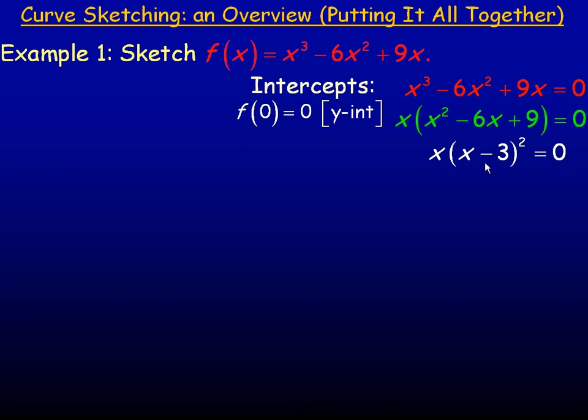So we have two different factors, so there's two different x-intercepts. And so if we set x equal to 0, we get 0. And if we set x - 3 to 0 and solve for x, we'll get 3. So 0 and 3 are the two x-intercepts.